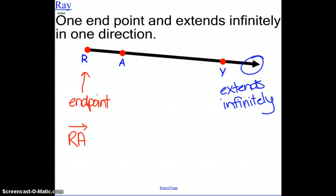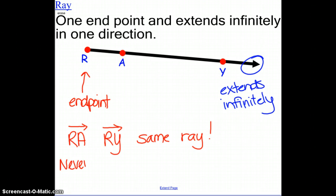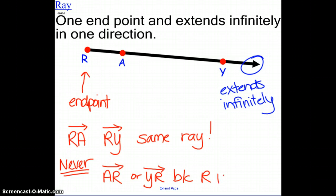So ray RY, and ray RA are both the same ray. There's two different ways to name that ray. We never want to write ray AR, or YR. And that is because R is the endpoint.